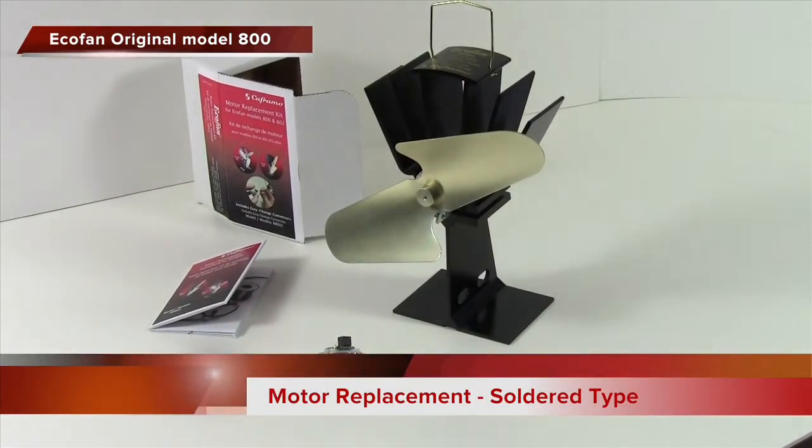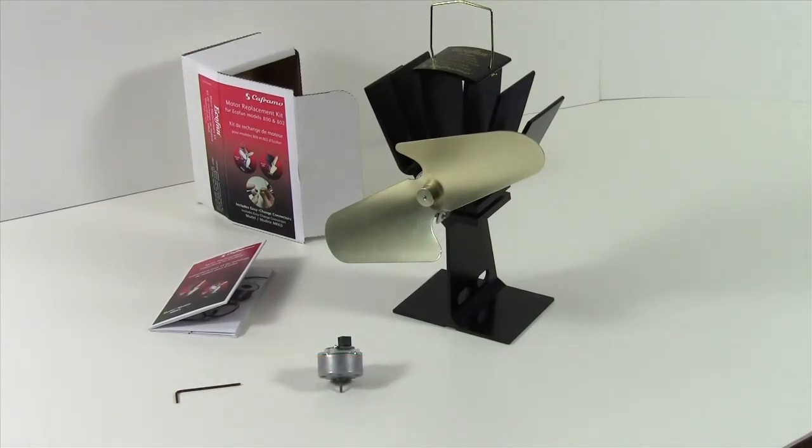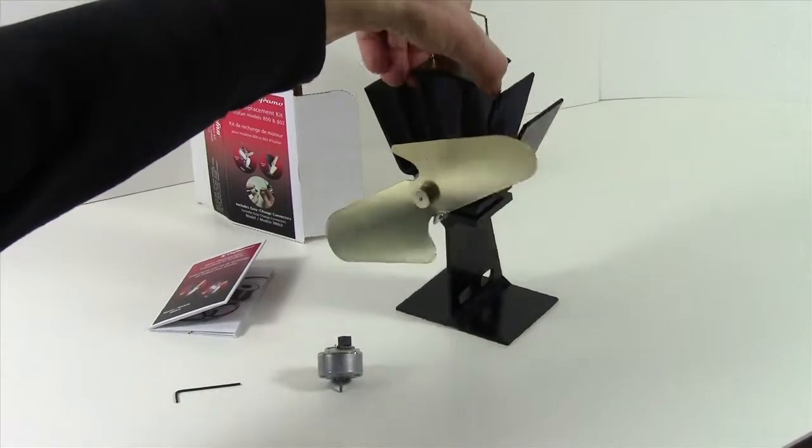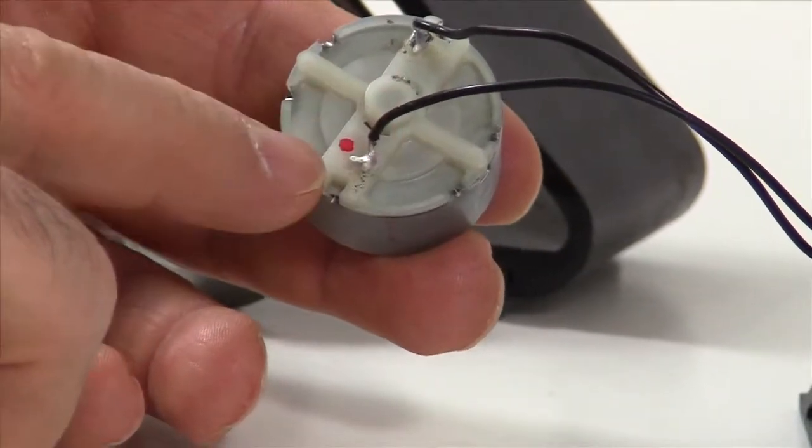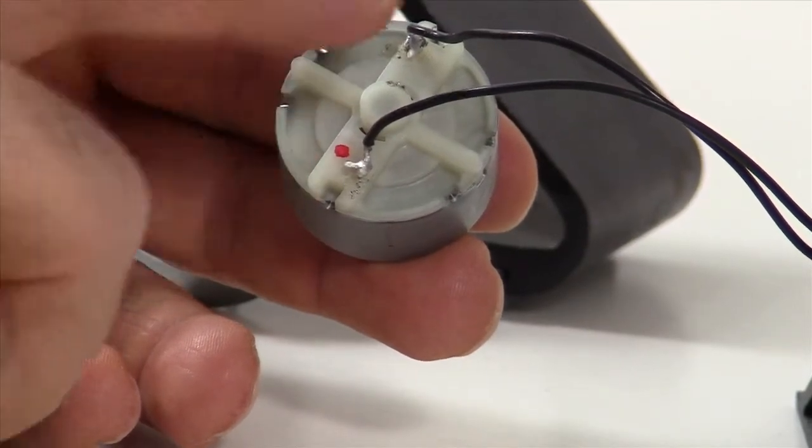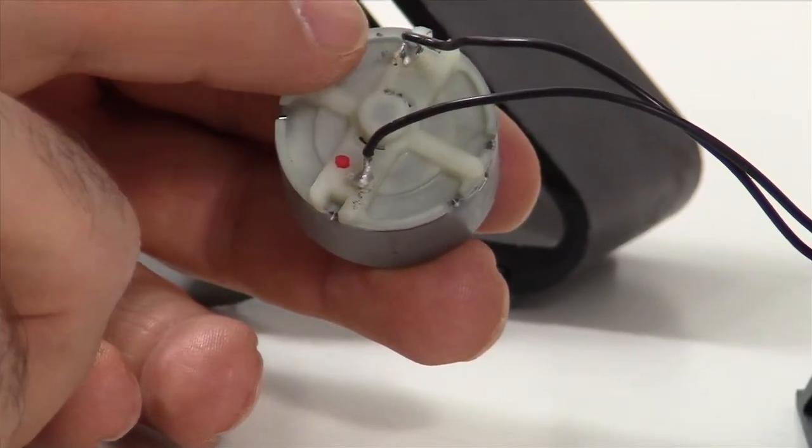Today we are replacing the motor on an EcoFan Model 800. Now this procedure is valid if the back of your motor looks like this. We can see that one wire is connected to a terminal with a red dot, and the other black wire is connected to a terminal that's unmarked.